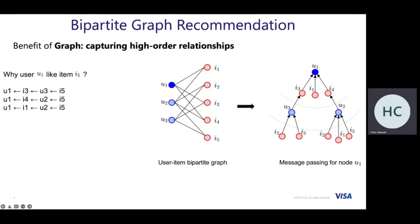We can also capture the relationship between user 1 and item 5 through another high-order path. For example, user 1 can reach item 4, item 4 can be reached by user 2, and user 2 purchased item 5 before. By using this kind of 3-hop high-order relationship, we can predict that user 1 might be interested in item 5. If we expand this bipartite graph into a tree structure, we can see that user 1 can reach item 5 through different kinds of paths.